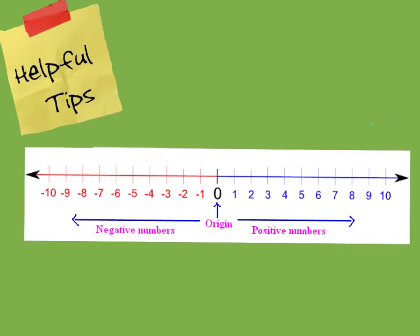Another useful tip is rounding. The magic number for rounding is five. If I need to round seven, it's way closer to ten than to zero, so I'd round up. If I look at four, it's way closer to zero than to ten, so I would round down to zero.